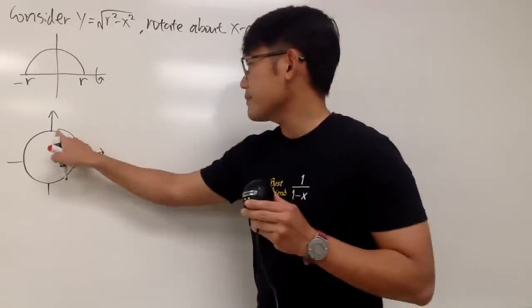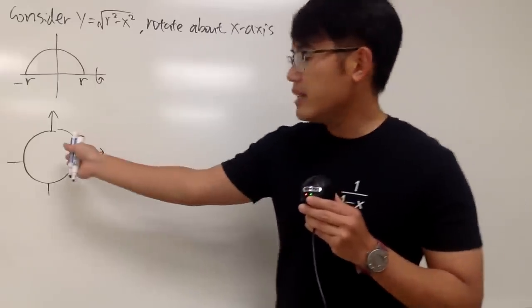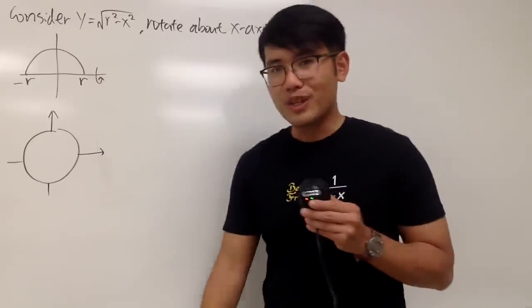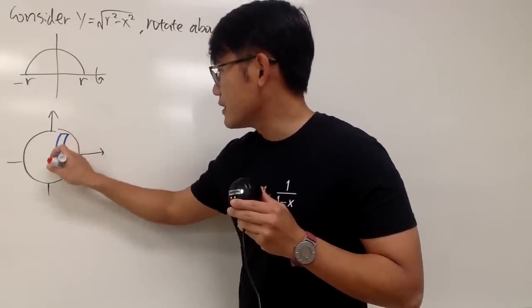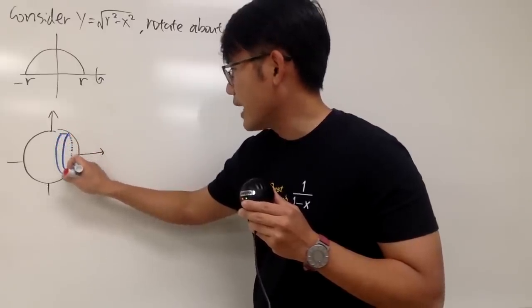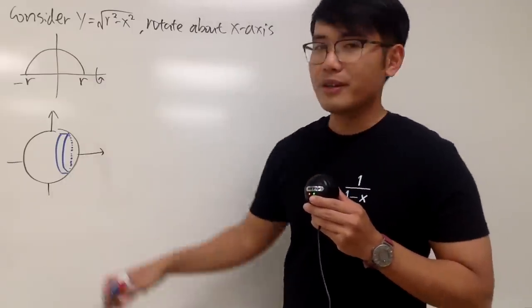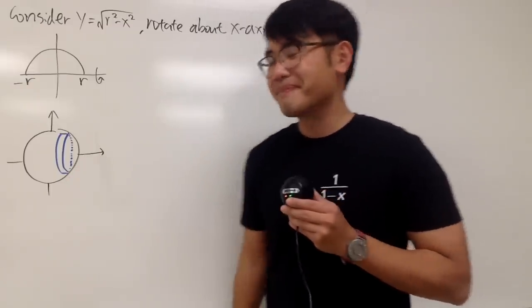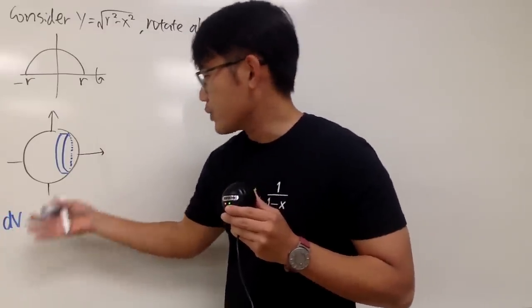Let's talk about how to get the volume first. To do the volume, we are going to use the disk method, meaning that we look at this ball and just keep making vertical slices — it's like cutting a watermelon. Each slice is going to be a disk, just like a small, very thin cylinder. Let me draw this for you guys. And let me remind you what the formula for the volume of a cylinder is: it's π r squared times h.